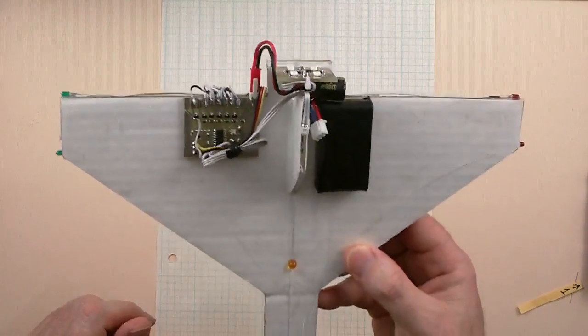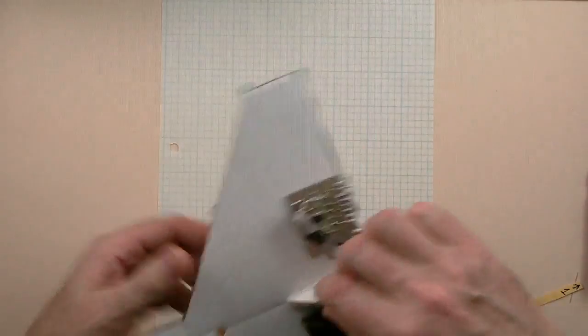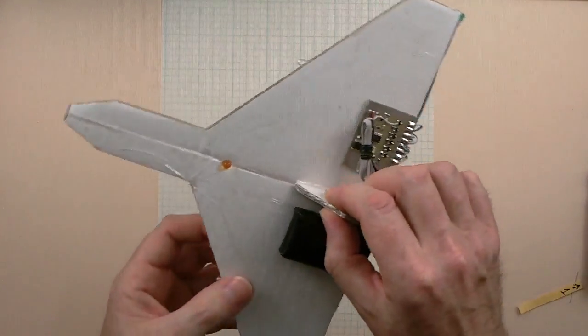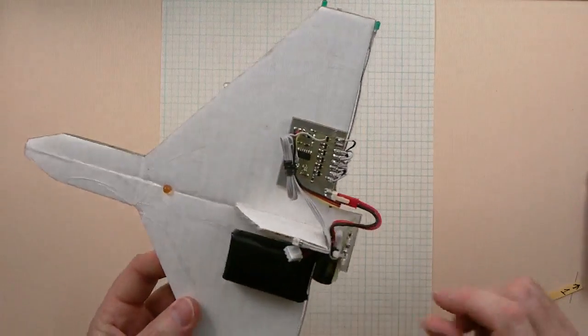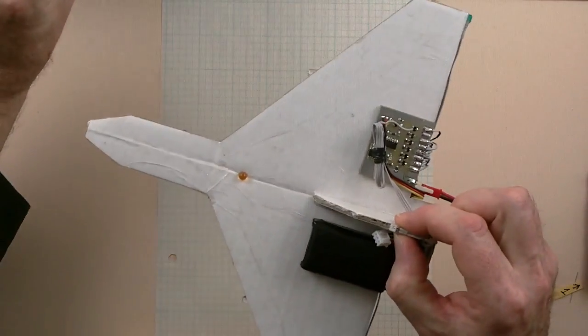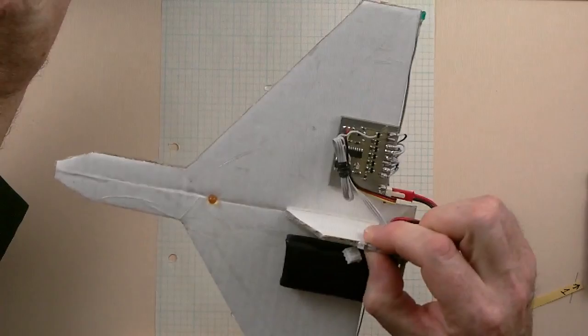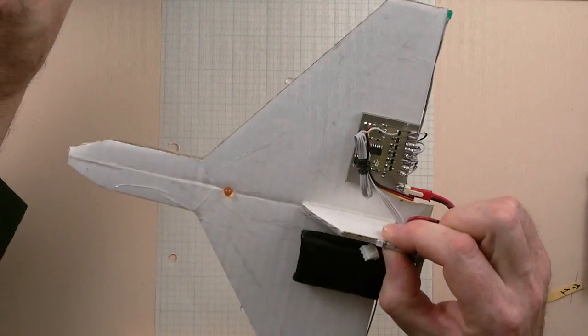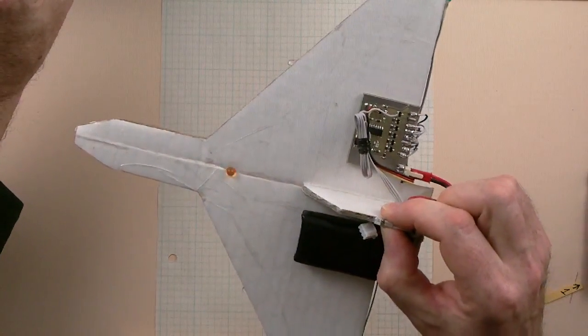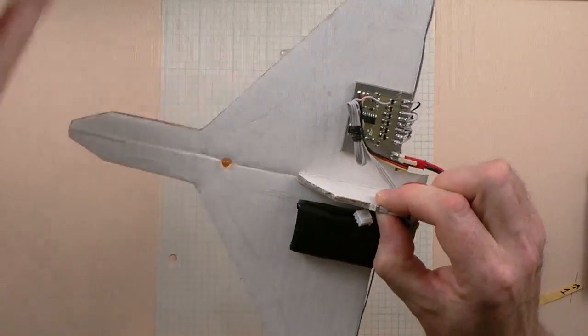Now I've got the transmitter set for all LEDs off, so there's nothing going at the moment. As I increase the position of the knob, it's channel six on this transmitter, we get to a point where the LEDs start flashing.